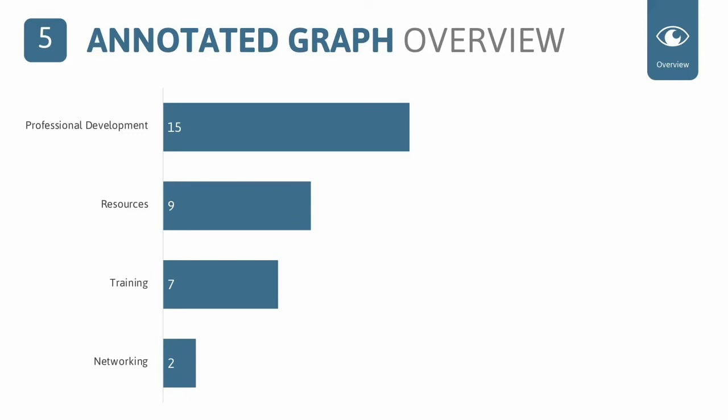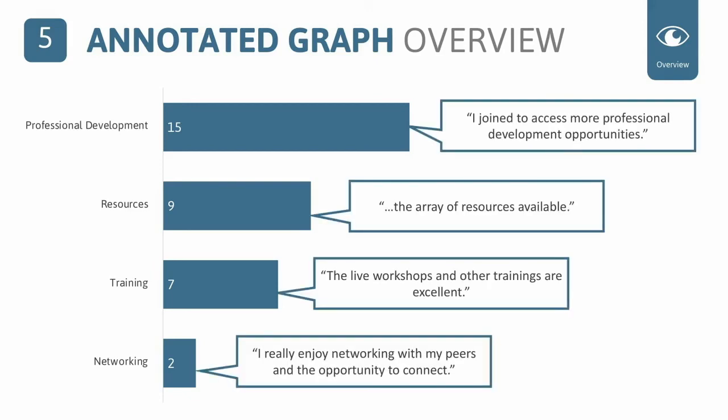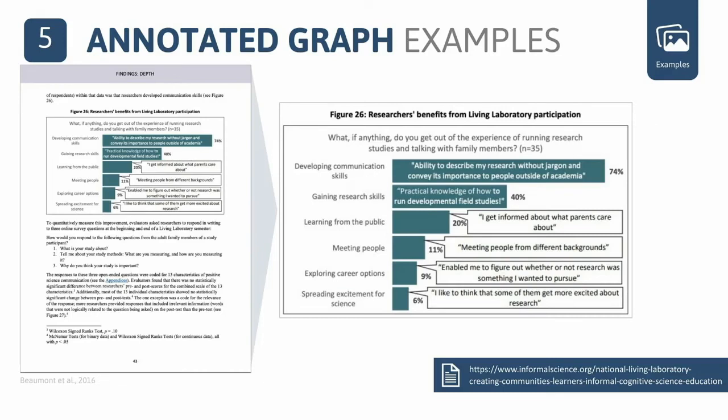Another example from InformalScience: Fitu and colleagues use a combination of table and icons to outline the impacts of their program and relative quotes. Strategy five is annotated graphs — a great strategy for mixed methods evaluations. You have a bar chart with your quantitative data, then you add in your qualitative quotes to create an annotated graph. With the addition of quotes, you've expanded the story behind the data and helped explain the why. In the first bar, for example, 15 respondents replied 'professional development' — the quotes help explain more details of the story.